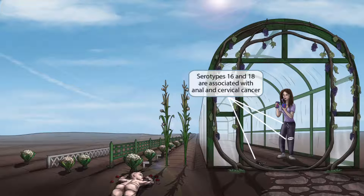This woman has a cancer hope ribbon near her crotch, which should help you remember that serotypes 16 and 18 are associated with anal and cervical cancer. Cervical cancer is especially important to remember because it is very common and is frequently screened for by performing pap smears.